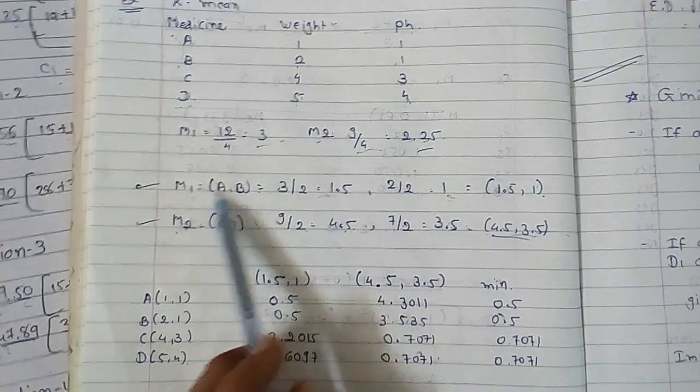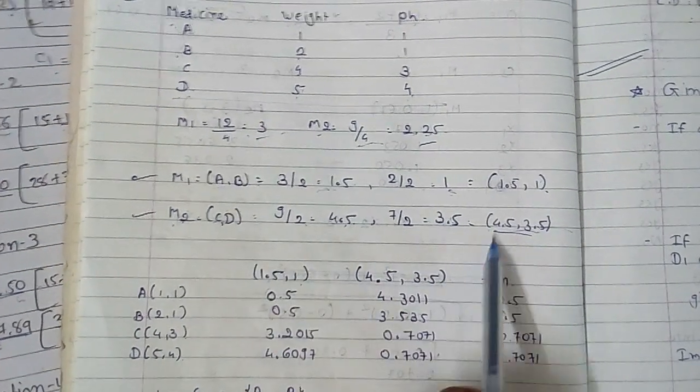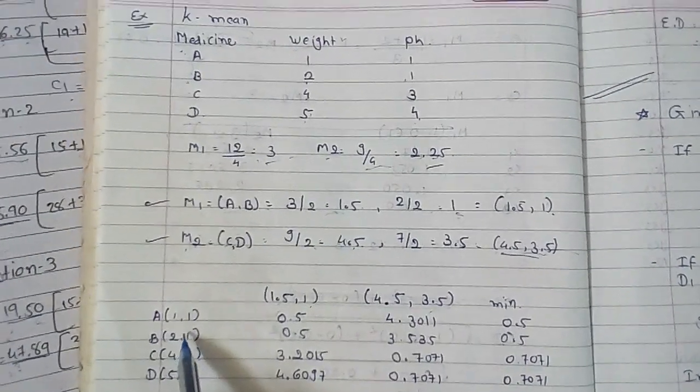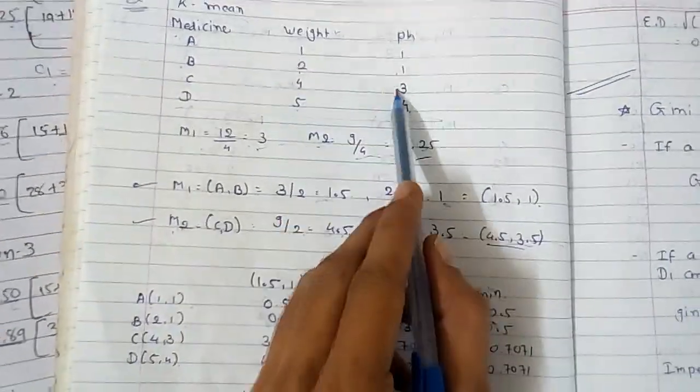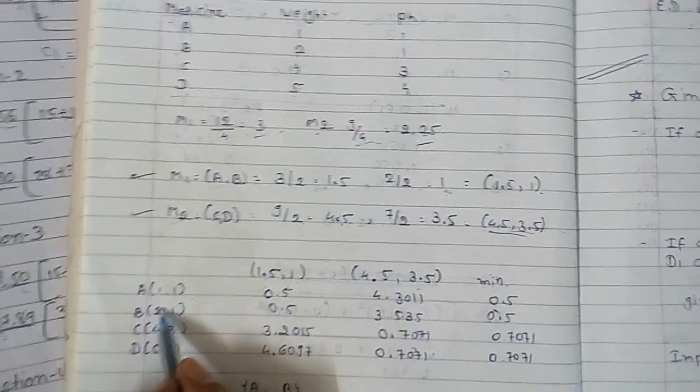Now you can find out Euclidean distance for this data. Here you get m1 is 1.5 and 1, and m2 is 4.5 and 3.5, and the data points are 1,1; 2,1; 4,3; and 5,4.